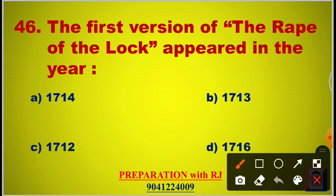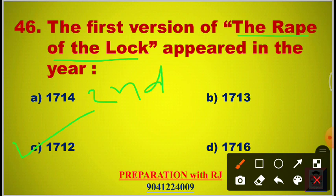Question 46: The first version of The Rape of the Lock appeared in the year — options are 1714, 1713, 1712, 1716. The answer is C, 1712. The first version of The Rape of the Lock was 1712, the second version was 1714, and the third version was 1717.